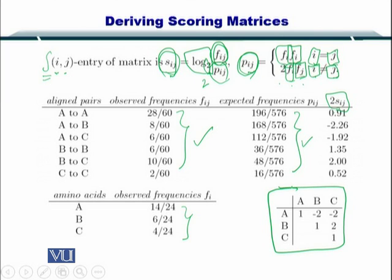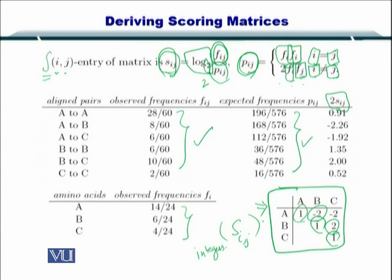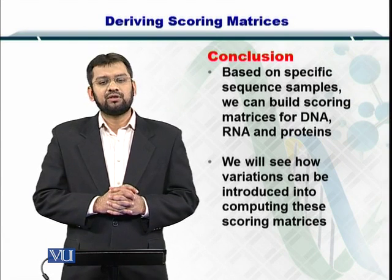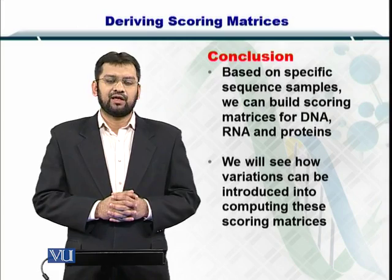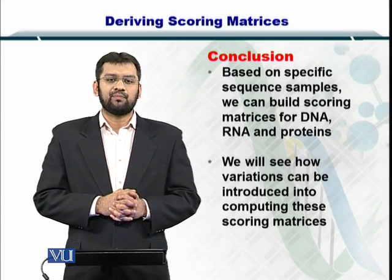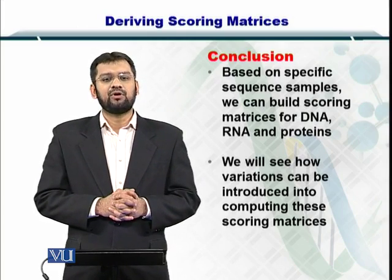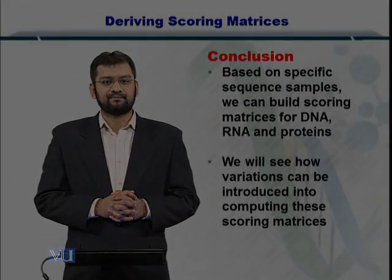If you note carefully, then each element is an integer. So we have converted all elements in s_ij into integers. So our scoring matrix for our small three amino acid world is given here. So in conclusion, based on the frequency of certain amino acids, we can compute the scoring matrices and then we can use them to compare sequences that are given to us later for comparison.